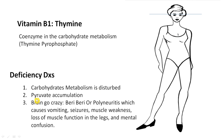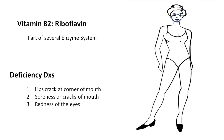Deficiency of Thiamine (B1) causes defective carbohydrate metabolism leading to pyruvate accumulation, which impairs energy production. It also causes peripheral neuritis — leading to vomiting, seizures, muscle weakness, loss of muscle function in legs, and mental confusion. All these are related to the brain and nervous system.